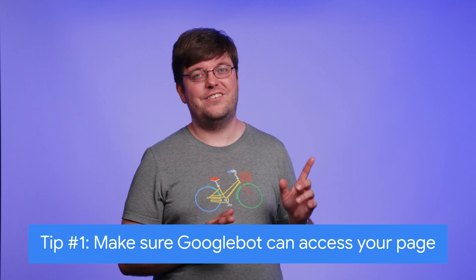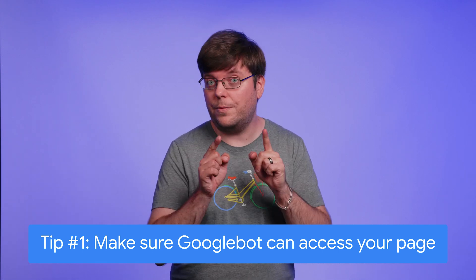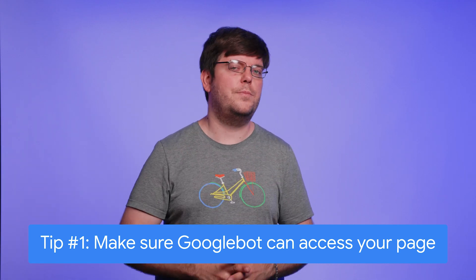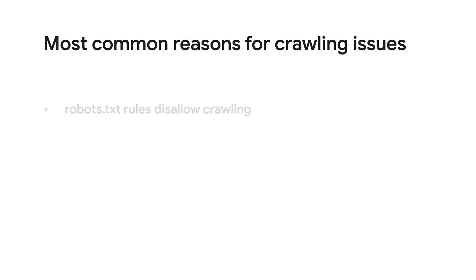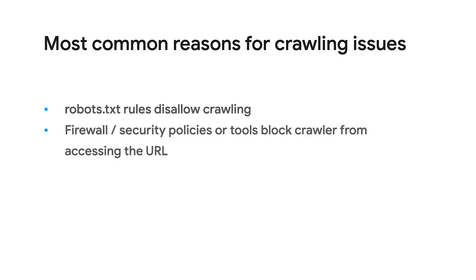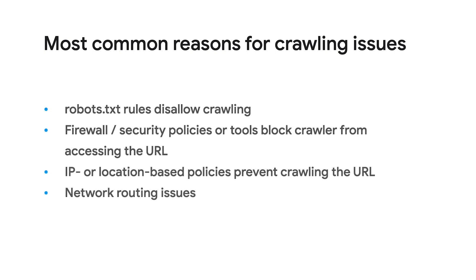Here's my first tip. It's relatively well-known but still often forgotten. Just because you can access a page in your browser doesn't mean that Googlebot can access it. This can have a bunch of reasons. Robots.txt might prevent a crawler from accessing a URL, or there might be a firewall or bot protection blocking Googlebot. There might also be networking or routing issues between Google's data centers and your web server, and many more. So opening the URL in the browser isn't quite a good test.